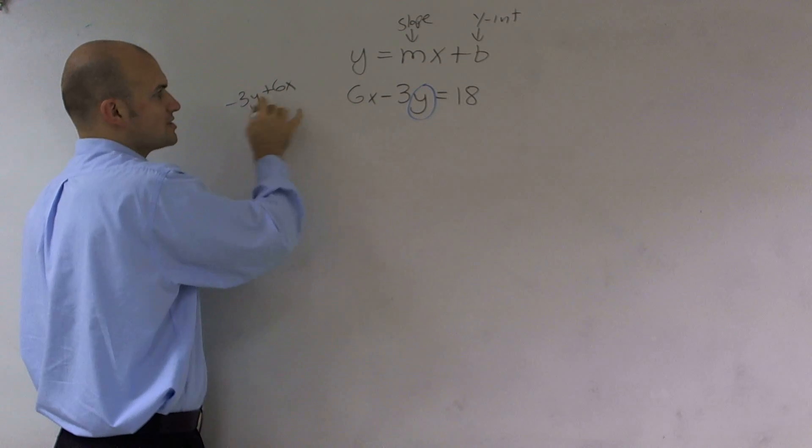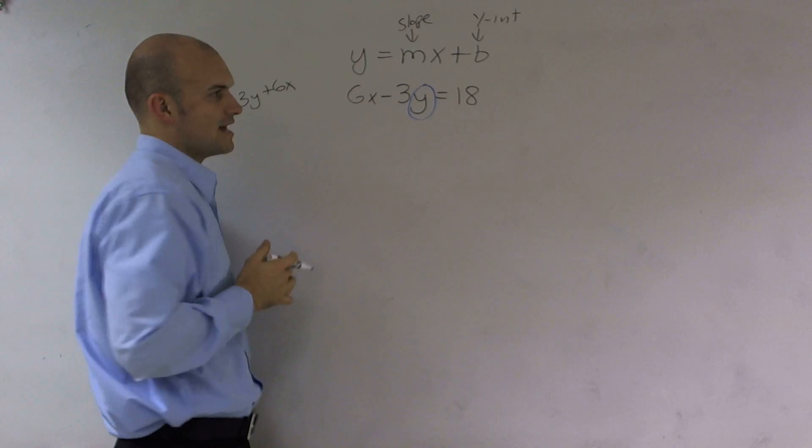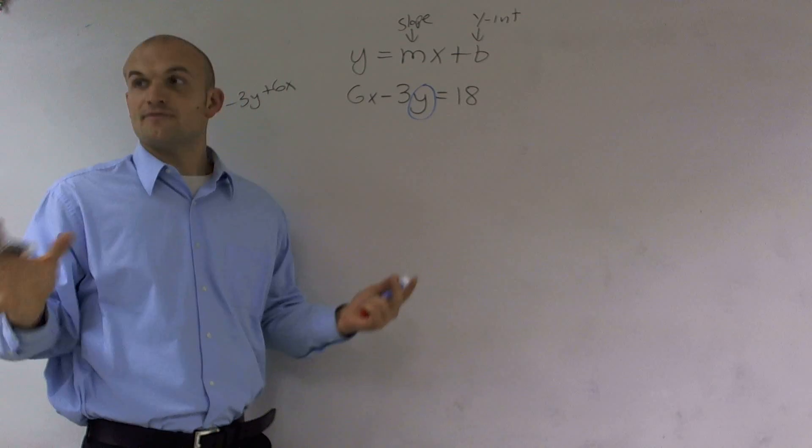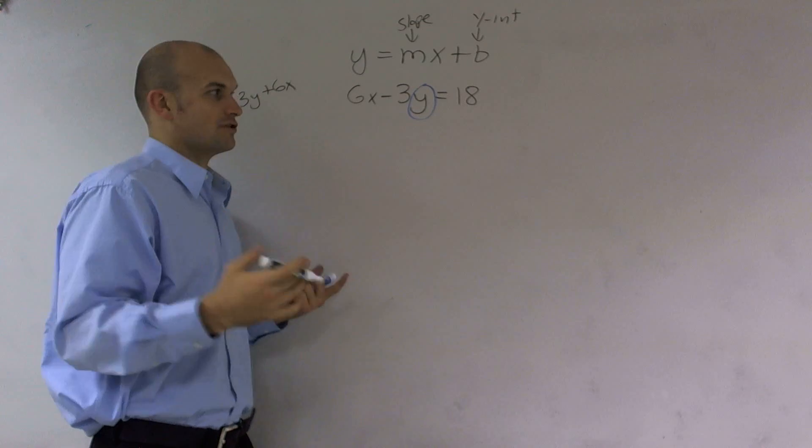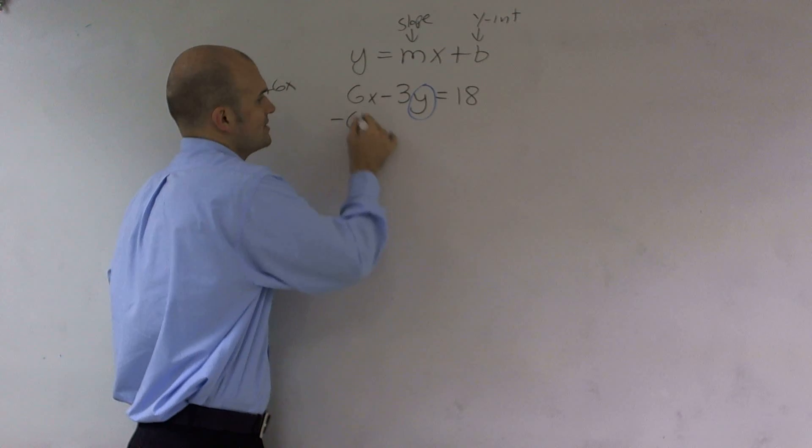Right? That's the same thing as that. So I'm really adding a positive 6x. So the first thing you want to do is undo your addition and subtraction to your variable. So I'm going to subtract a 6x.